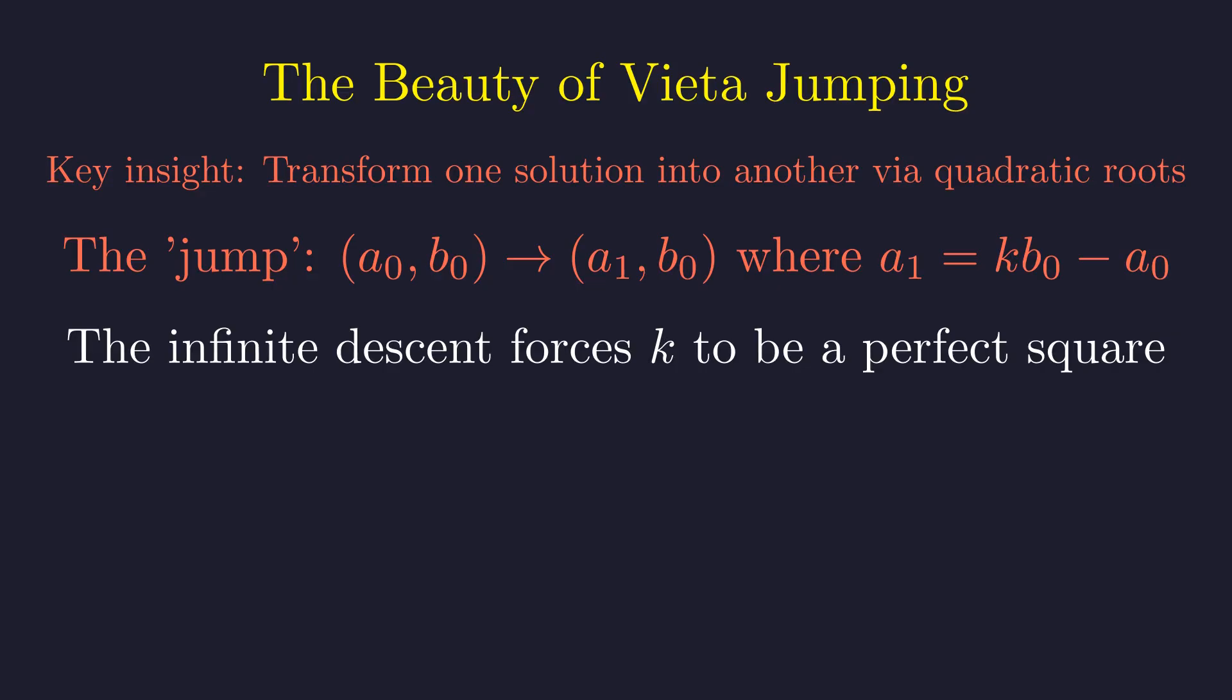The genius of infinite descent is that it uses the well-ordering of positive integers to constrain the possible values of k. If we could keep finding smaller and smaller solutions forever, we'd violate a fundamental property of the integers.